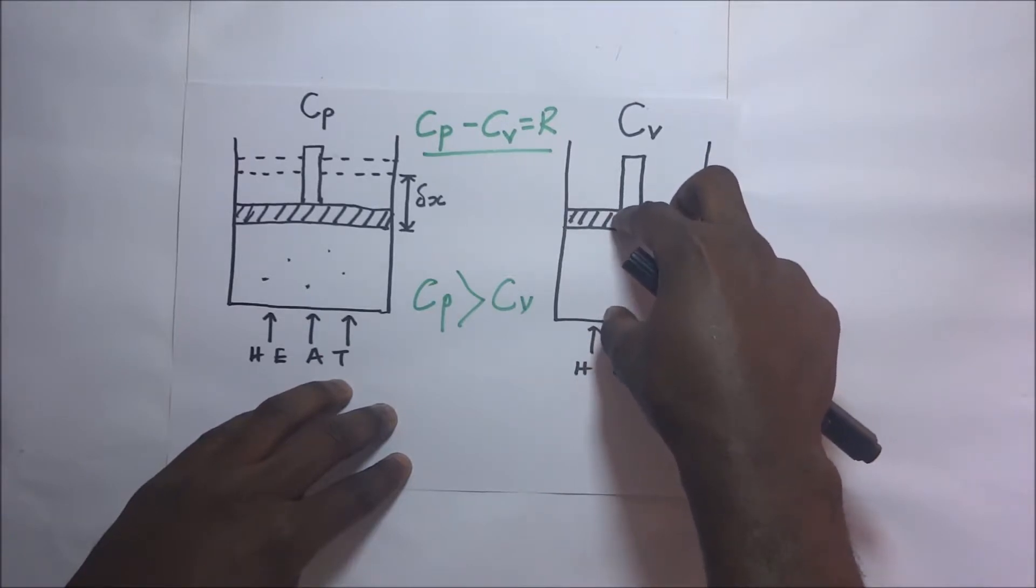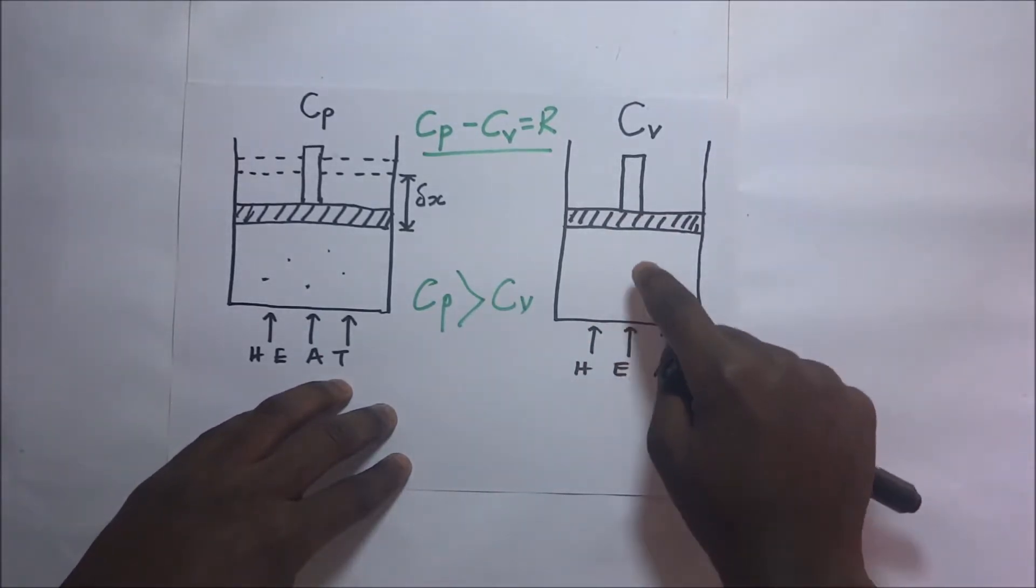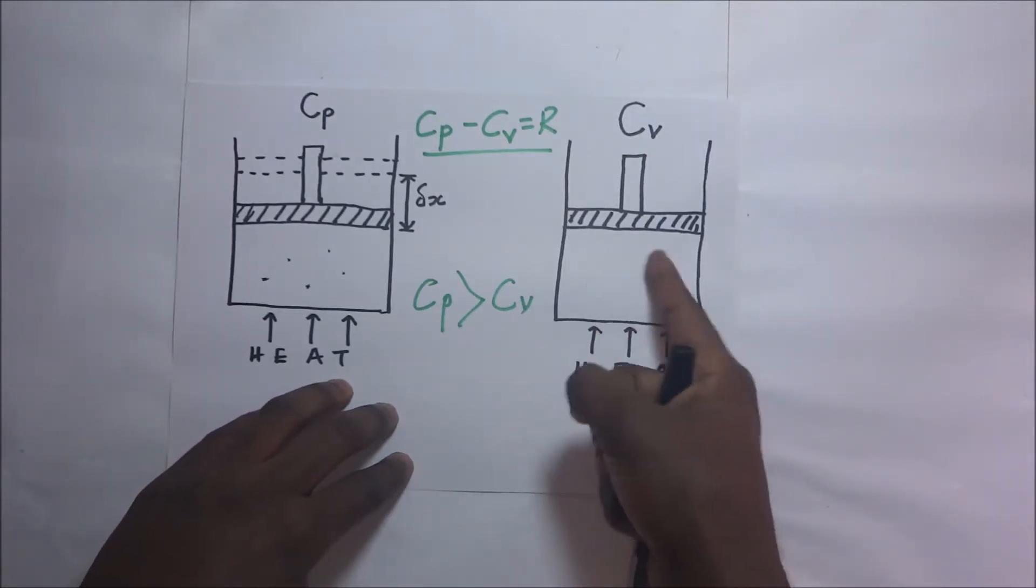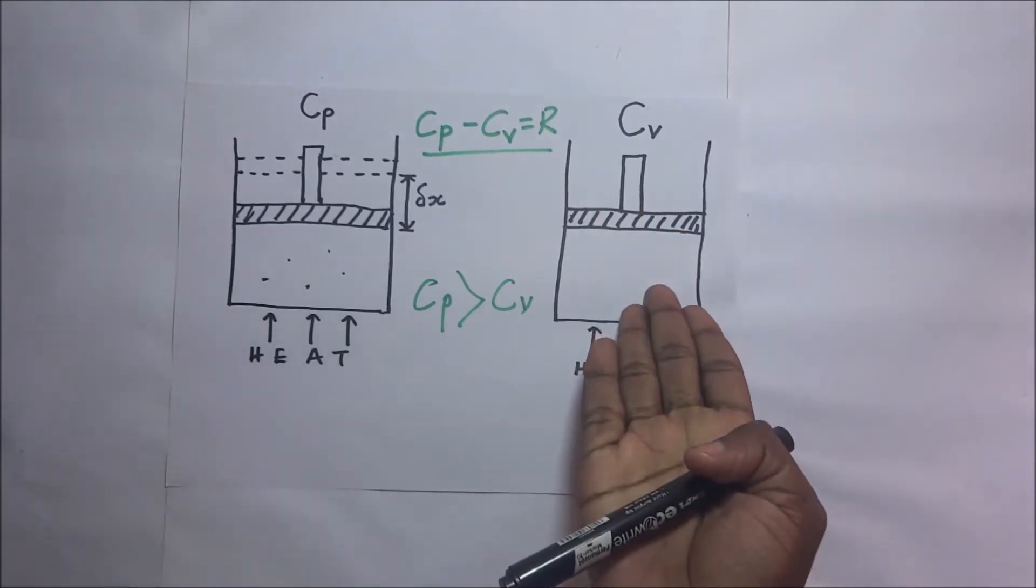So if this volume is constant, it means that all the amount of heat that is coming in here is only being used to increase the internal energy of the gas and no work is being done by this gas.